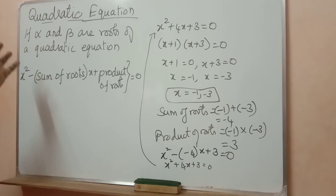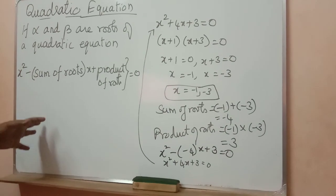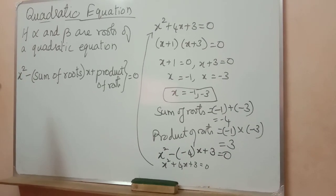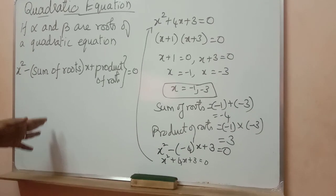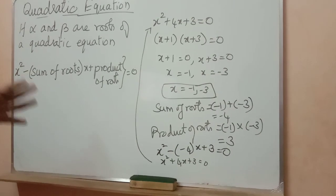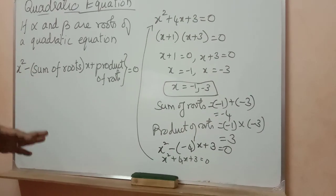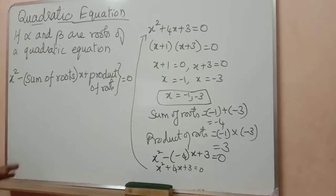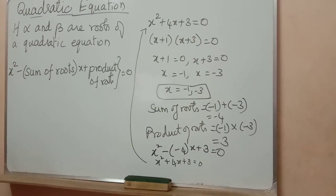From a polynomial, if you find the value of x, it is called the zeros of the polynomial. From a quadratic equation, if you find the value of x, it is called the roots of the equation.